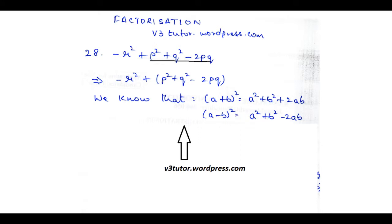So we use this identity to write this as minus R squared plus P minus Q the whole squared. This corresponds to this identity. So instead of A and B you put P and Q.